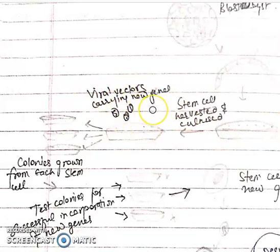These stem cells are co-cultured with the viral vector containing our desired genes, then we go for selection. Stem cells which take up this viral vector containing our transgene are selected. Colonies are grown from each stem cell and tested for the presence of our transgene. After selection, the stem cell with new gene is taken up.